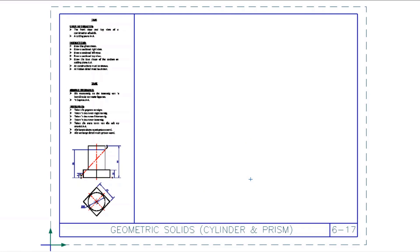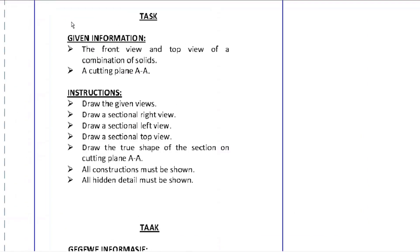Today we are going to be looking at Exercise 617, which is a set of geometric solids — a cylinder and a rectangular prism. The task reads: you have to redraw the front and top view of a combination of solids with the cutting plane AA, then draw a sectional left, right and top view, and find only the true shape. If they say draw the view, it's the entire view, but if it's just a true shape, then you just do the area that's cut.